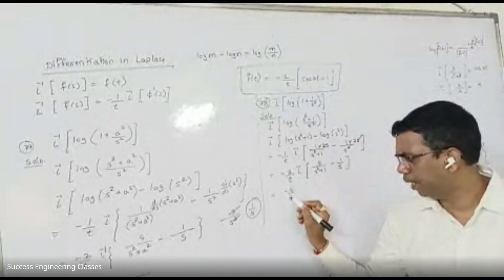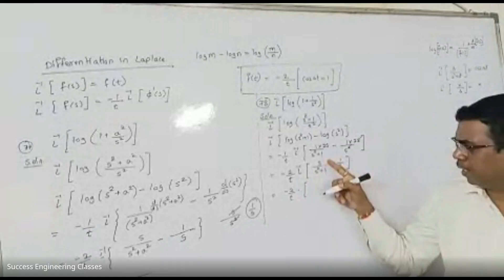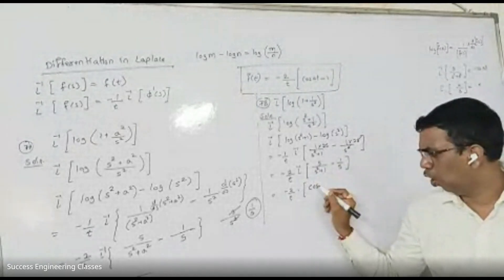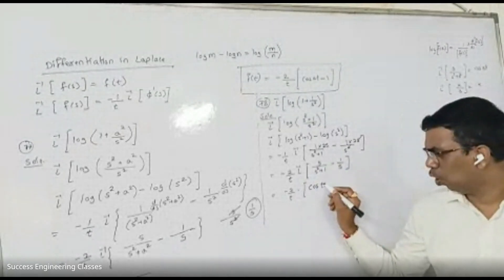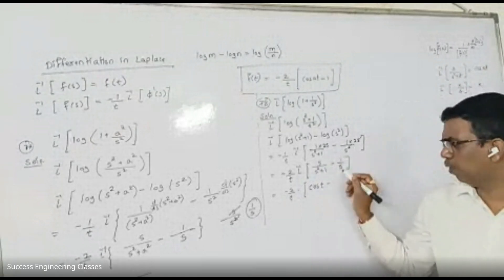Minus 2 by t, it is Laplace inverse of s upon s square plus 1. And the formula gives, it is cos t.